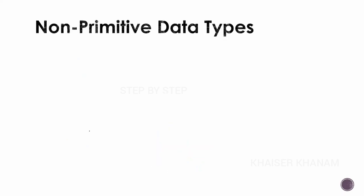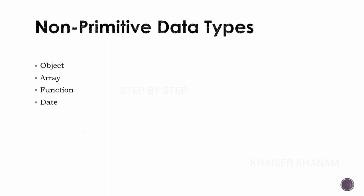Coming to non-primitive data types, we have objects, arrays, functions, and date. Non-primitive data type is also called reference data type. We are going to see some examples so that we will understand data types in a better way.